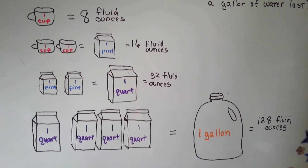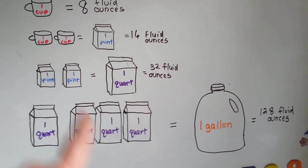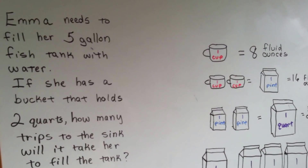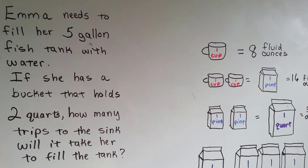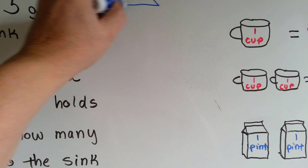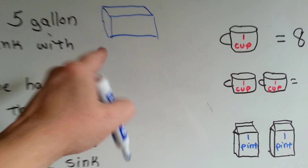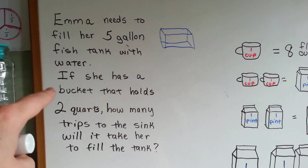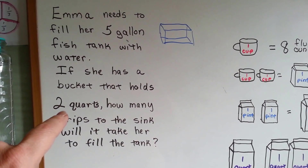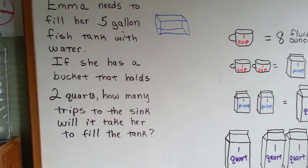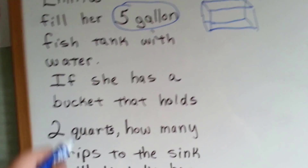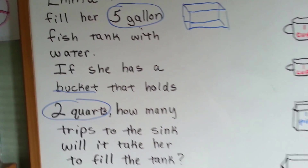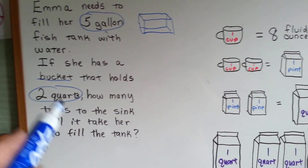Now we're going to do some word problems using these conversions and this chart to help us answer them. The first one: Emma needs to fill her five-gallon fish tank with water. If she has a bucket that holds two quarts, how many trips to the sink will it take her to fill that five-gallon tank? It's important to know that her tank is five gallons and her bucket is two quarts. So the first thing we need to figure out is how many quarts are in a gallon.